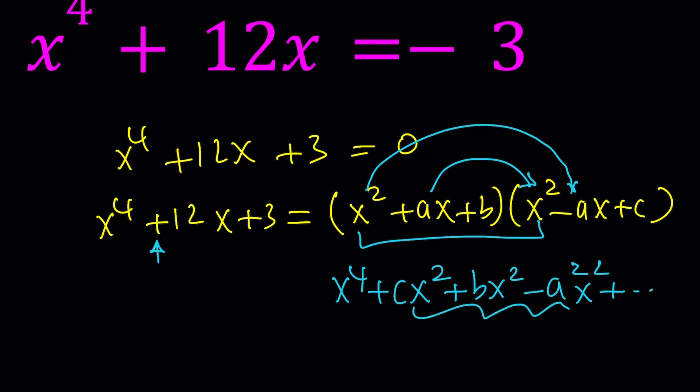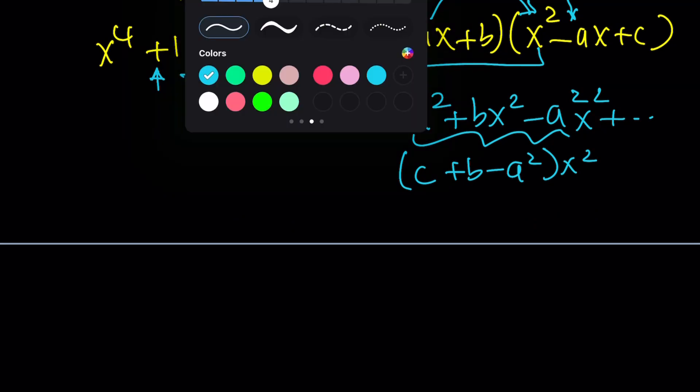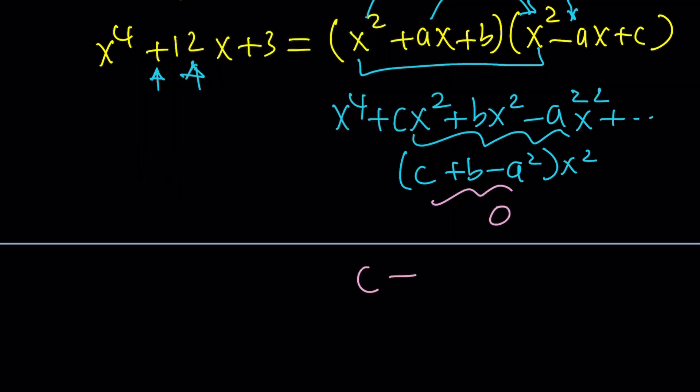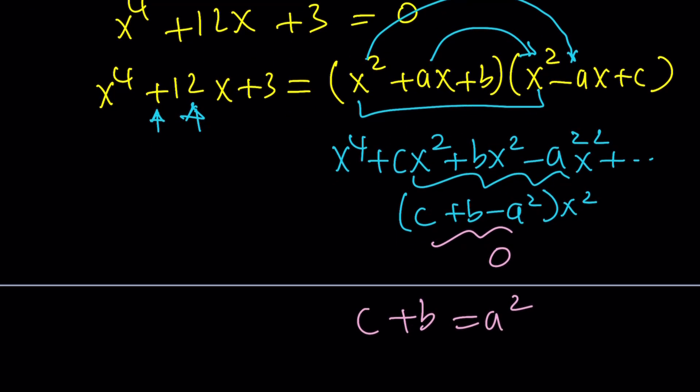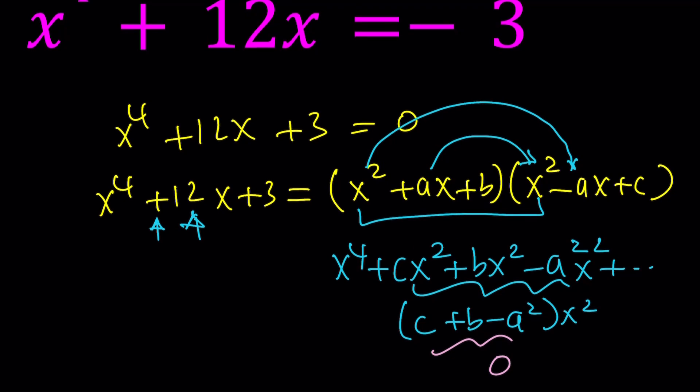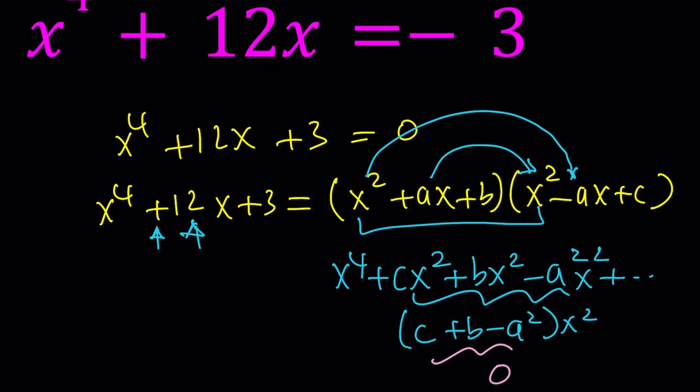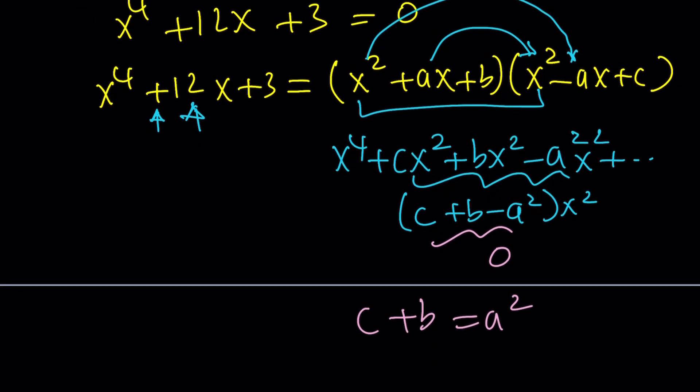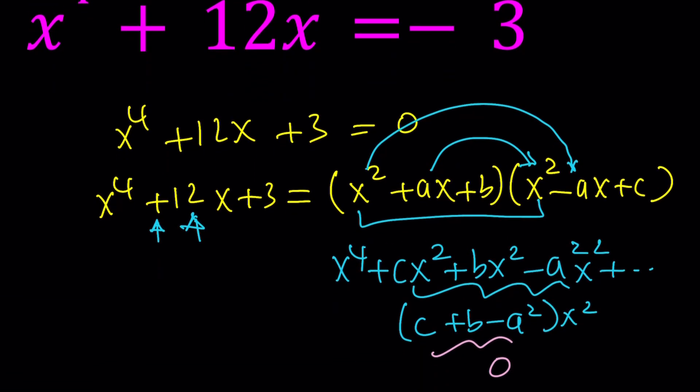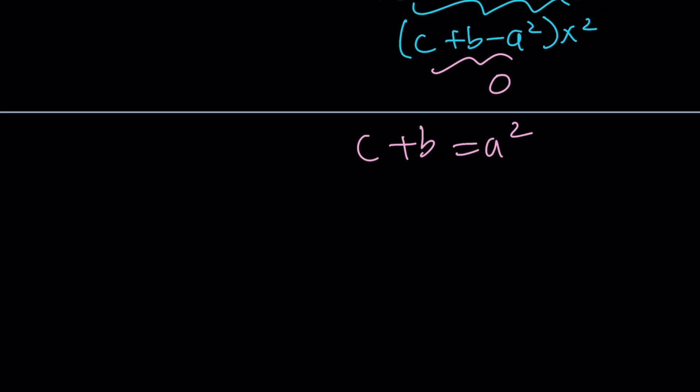Notice that you're going to get the coefficient of x squared from here. And since there's no x squared here either, then you can basically set this equal to zero. And that's going to give you one of the equations: c plus b equals a squared. You're going to get two more equations with three variables. You're going to solve it, but that's going to give you a cubic equation. To reduce a quartic, it's good to get a cubic. If you're reducing a quintic, most of the time you would not be getting a quartic or anything lower. That's why quintics in general are not solvable. There is no quintic formula. So that's one of the methods. Let's go ahead and go with the second method.